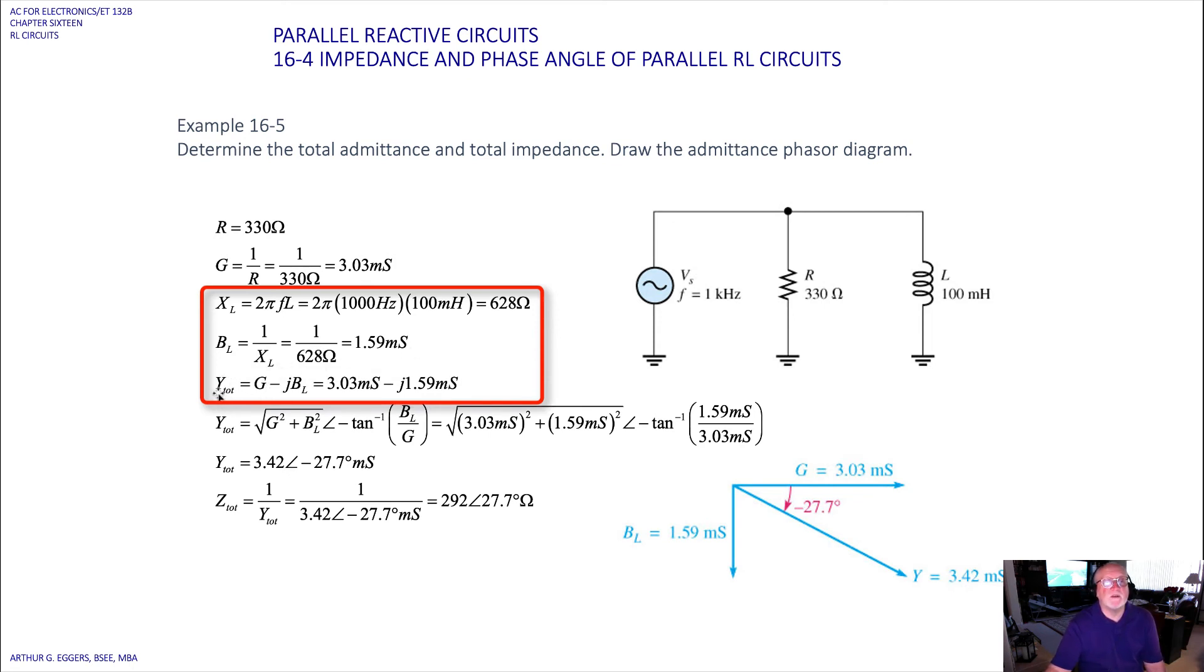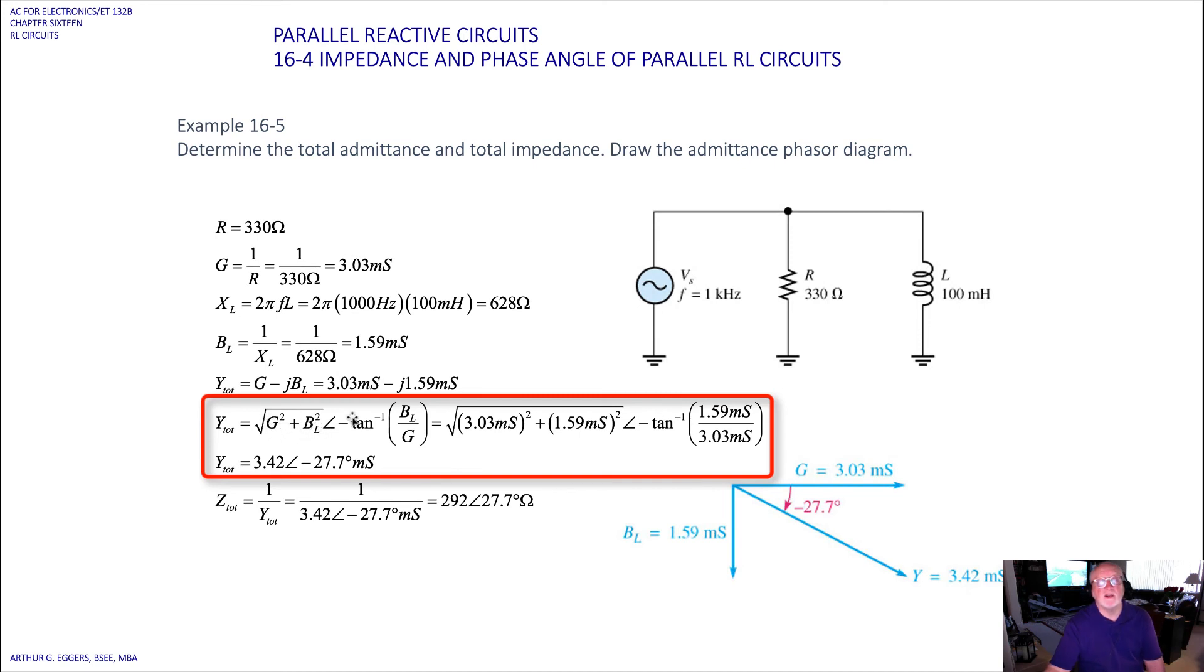So from that in rectangular form we can find the total admittance, Y_total equals G minus jB sub L. So there is our rectangular form. Now we can take those terms and put them into the polar conversion.